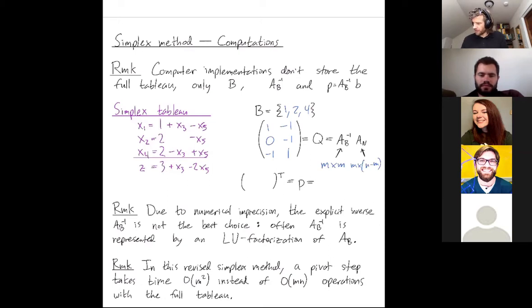P in this example is the vector 1, 2, 2. To get your vertex on the polytope, you just have to add in zeros here in coordinates 3 and 5 to get your vertex in 5-dimensional space. P only encodes the coordinates on the basic variables of your vertex.